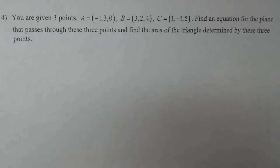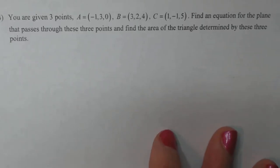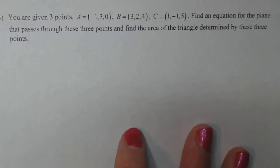Right now we have three random points in space, A, B, and C. You can see their numbers right there. We want to find an equation for the plane that passes through these three points and find the area of the triangle determined by these three points.